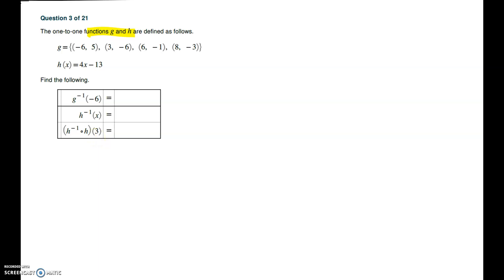The first one is g inverse of -6. If you examine the g function, the first entries are x and the second entries are y. So -6 is x, 3 is also x, 6 is x, 8 is x. All these values are inputs.